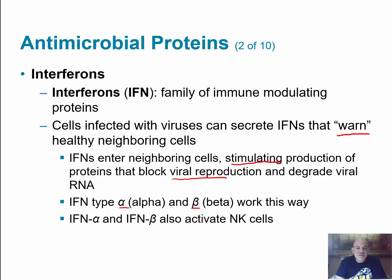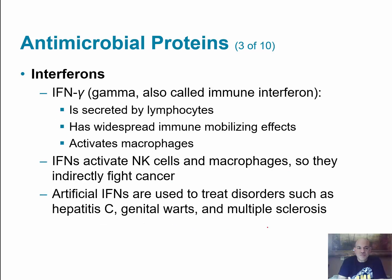There are alpha and beta interferons, which work to block viral reproduction and also activate natural killer cells. There are also gamma interferons, also called immune interferons, which are secreted by lymphocytes and have widespread immune-mobilizing effects, including activating macrophages.